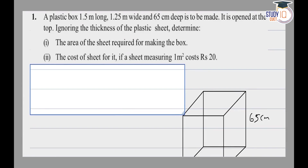In this question, a plastic box is given of length 1.5 meter, width 1.25 meter, and depth 65 cm. This box is created by ignoring the thickness of plastic, and the area required for making the box is to be found.